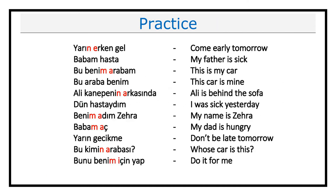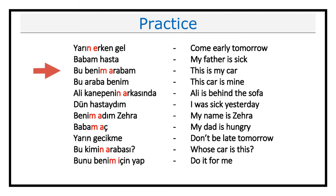That's basically it to the connection rule. Let's practice the rule through a couple of examples. In the first example, we have a connection between 'yarın' and 'erken'. Therefore, you will pronounce them comparatively connected. In the second sentence, we don't have any connection case, so you will just pronounce it normally. In the third sentence, you have a connection case between the word 'benim' and 'arabam'. Bu benim arabam. In the fourth case, again we don't have any connection, so you will pronounce it normally.